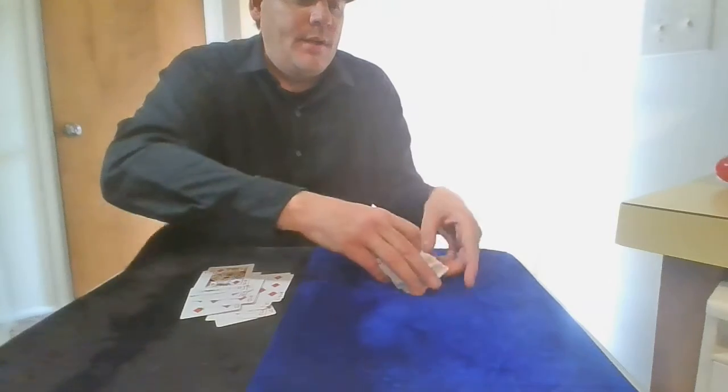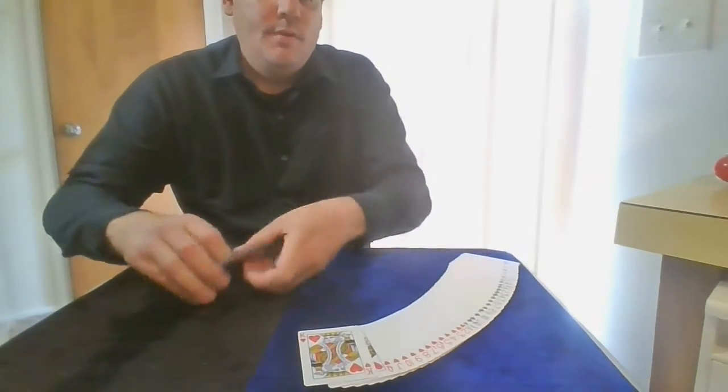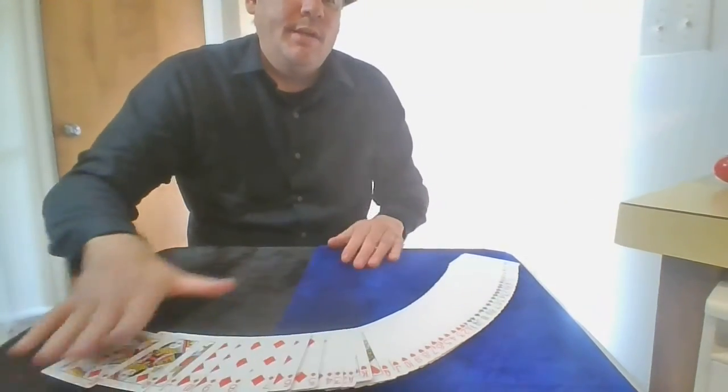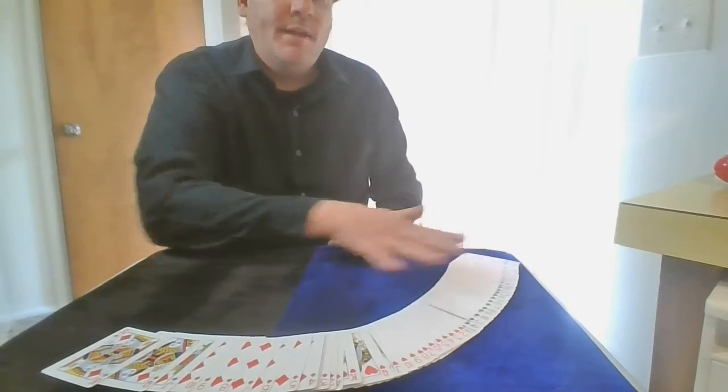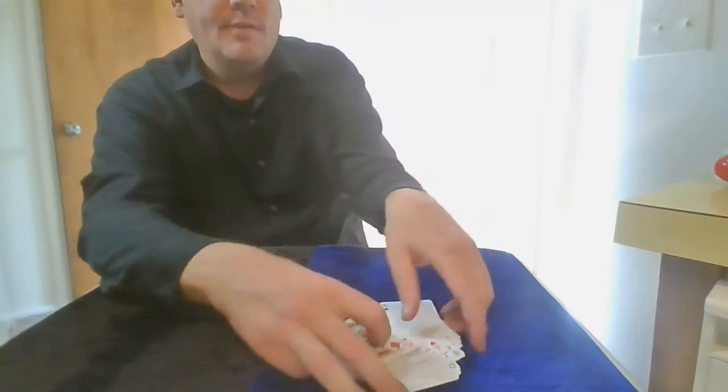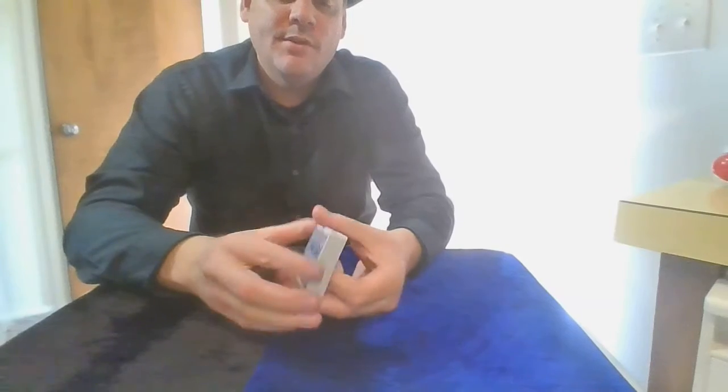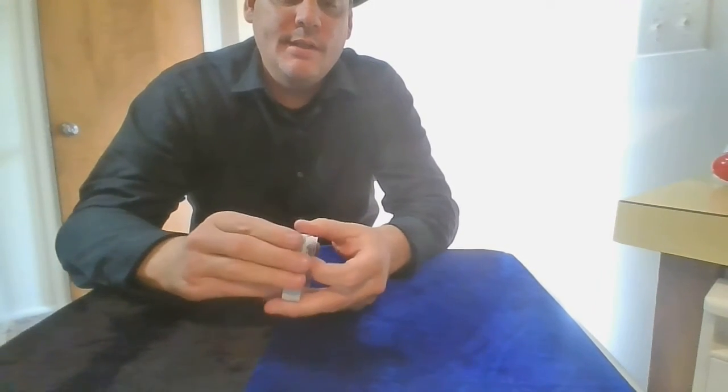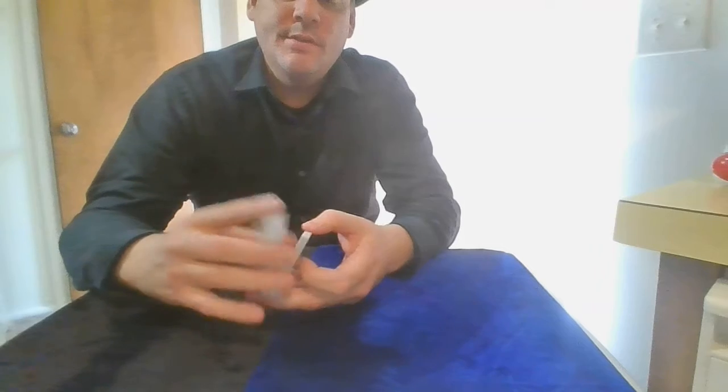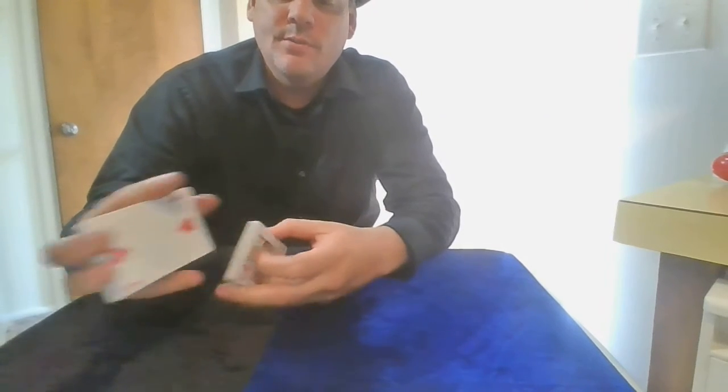Ace through king, right? So the whole deck is in perfect order, ace through king. You have blacks on one side, reds on the other, and you give some cards a false shuffle. The false shuffle that I'm going to use here is the Homer the Wag idea, and what it is is a false faro shuffle. So it's really cool.